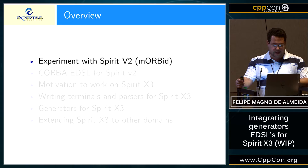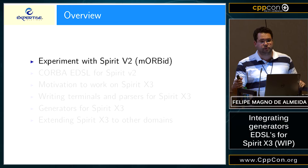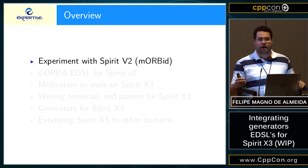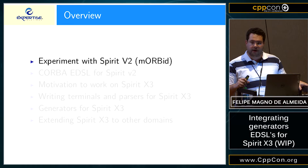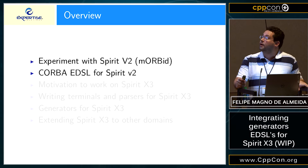The overview of the presentation: we'll talk first about using Spirit V2 to create a modern CORBA library and extending Boost Spirit V2 to create an embedded domain-specific language for format specifications — in this specific case, the CORBA communication format. That's the CORBA EDSL for Spirit V2.